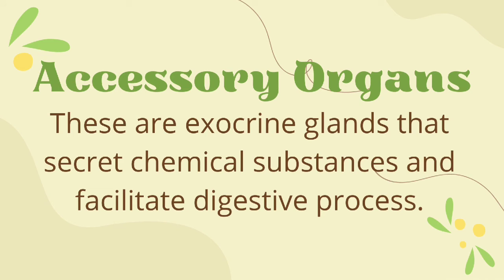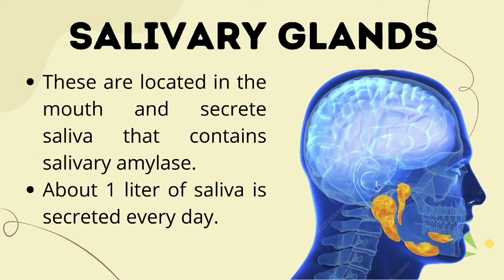Next are the accessory organs — these are exocrine glands that secrete chemical substances and facilitate the digestive process. The organs food passes through are part of the alimentary canal, while these accessory organs help with the process of digestion. First, the salivary glands — these are located in the mouth and secrete saliva that contains salivary amylase.